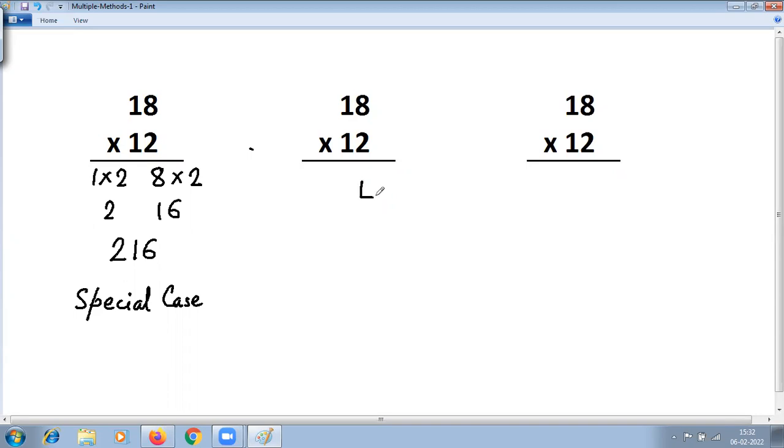The first step here is multiply the units place. 8 into 2, 8 multiplied by 2 is 16. You have to write 6 here, carry extra digits to next step.